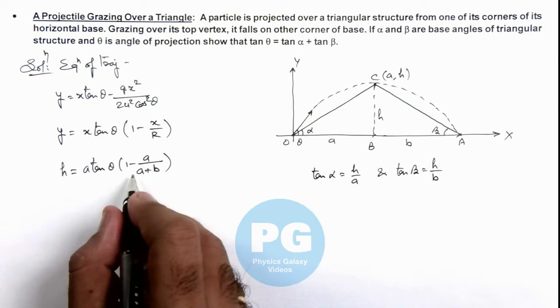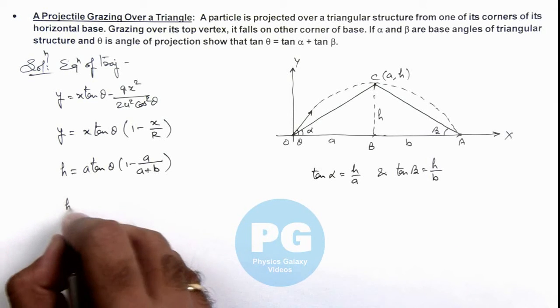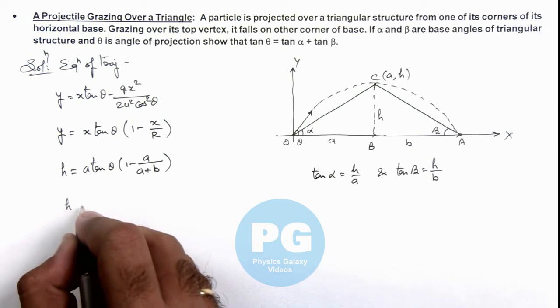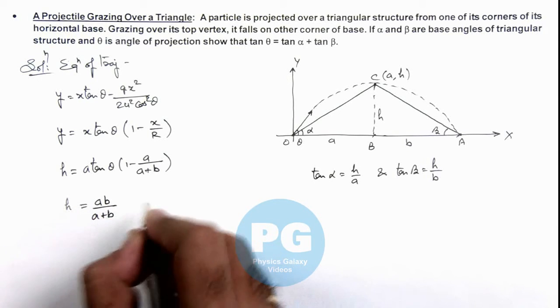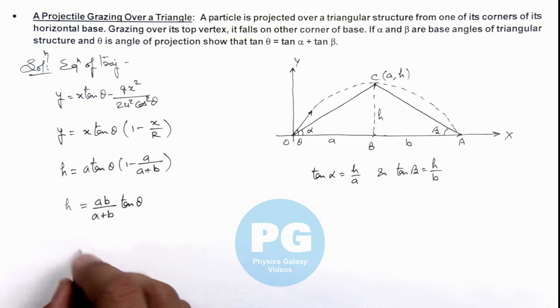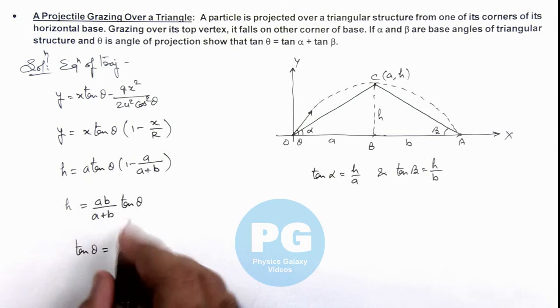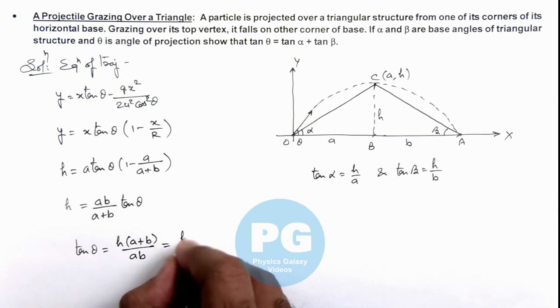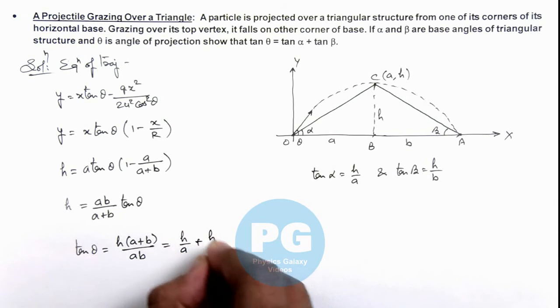If we further simplify this we can see the value of h we are getting is a b upon a plus b multiplied by tan theta. And further simplifying, we can see the value of tan theta here is given as h multiplied by a plus b upon a b, which can be further written as h by a plus h by b.